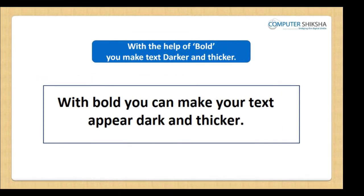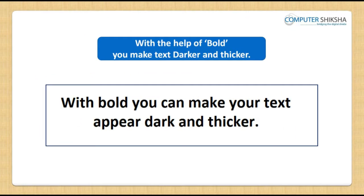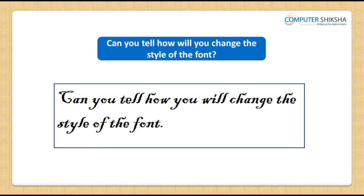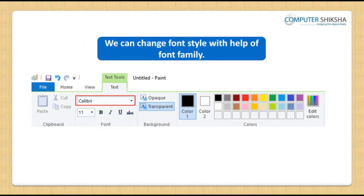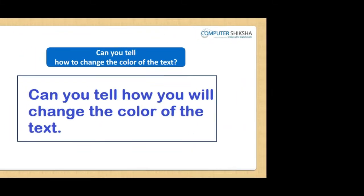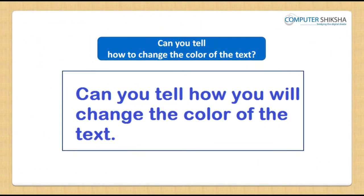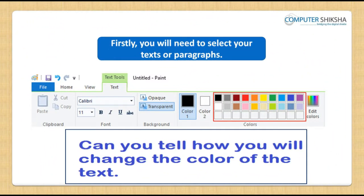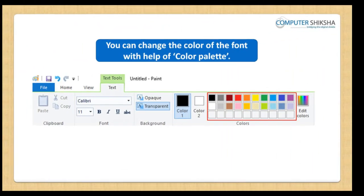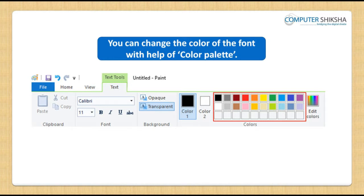Can you tell what happens with the bold option? With bold, you can make your text appear dark and thicker. Can you tell how you will change the style of your text? You can change the style of the text with the help of the font family. To change the color of the text, firstly you will need to select the text and then use the color palette to select any color of your choice. This color will then get applied to the selected text.